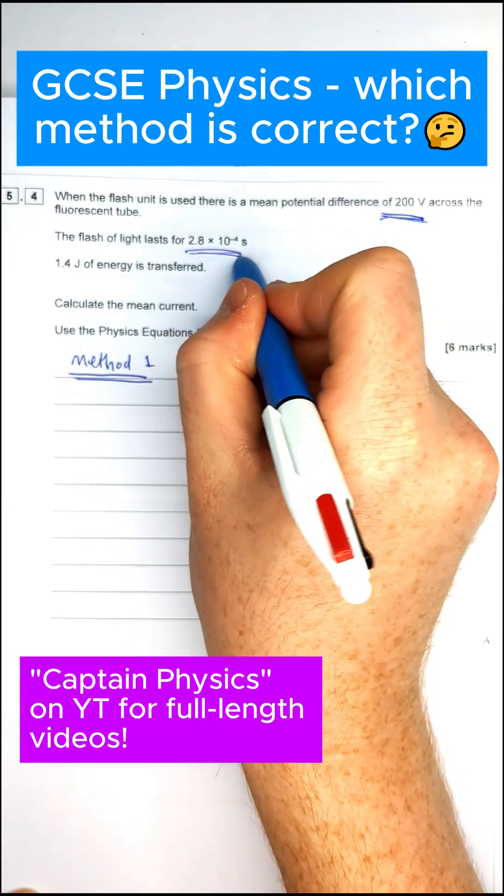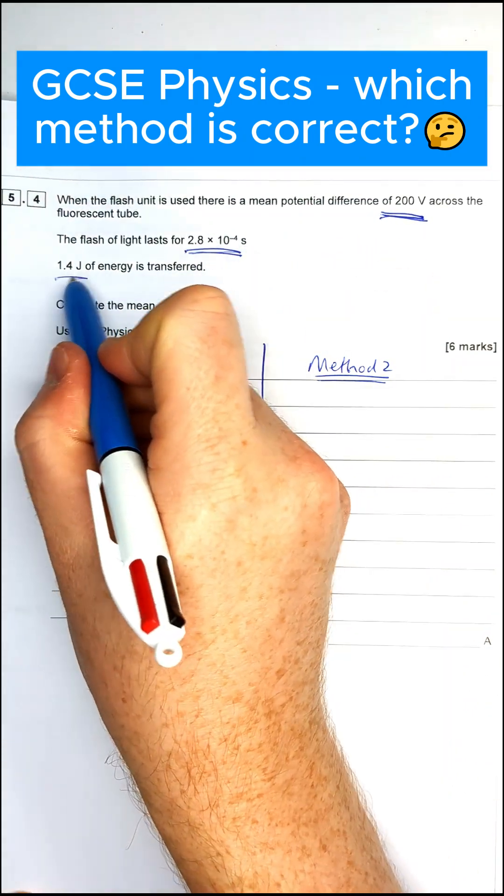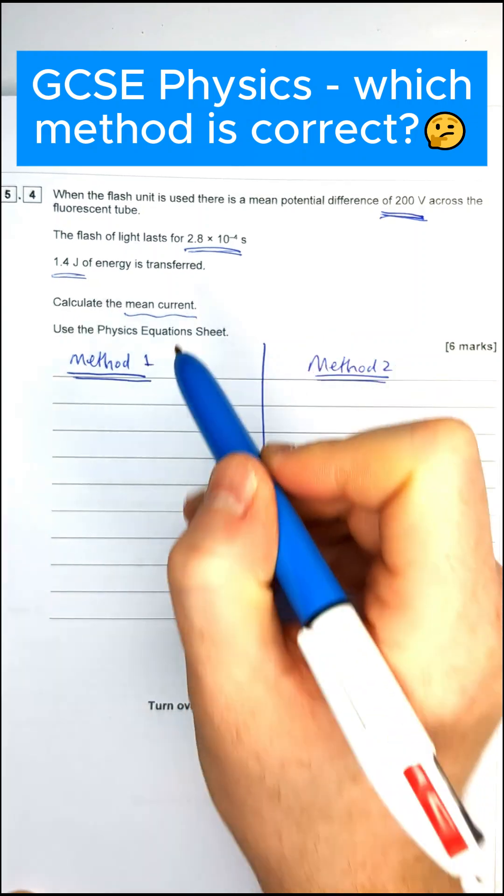We've got 200 volts. Flash lasts for this amount of time. We've got 1.4 joules of energy transferred. The question asks us to find the current.